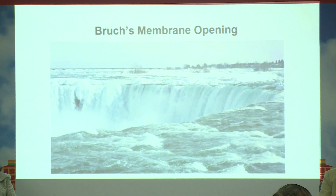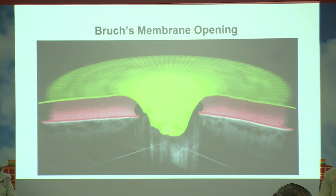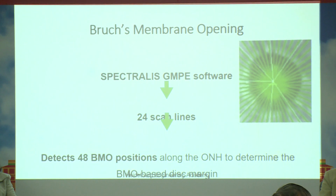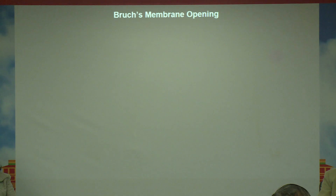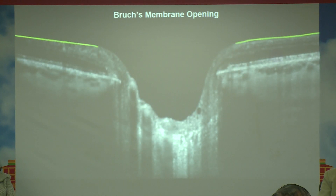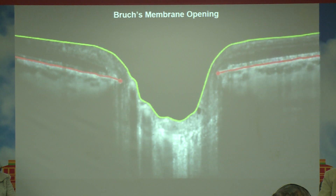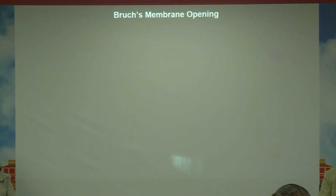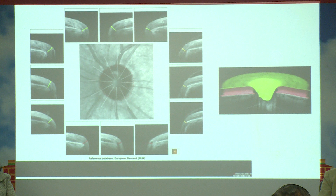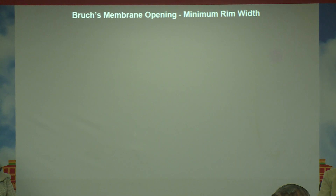Coming back to basics — the Glaucoma Module Premium Edition selectively segments the Bruch's membrane opening. It takes at least 48 Bruch's membrane opening sections. Bringing back the animation: you can see the internal limiting membrane, the Bruch's membrane as the red structure, and the red dot as the Bruch's membrane opening. The system gives you 48 sections of the Bruch's membrane opening.